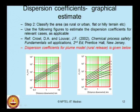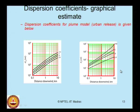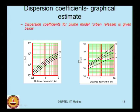For an urban release, two figures are available that vary significantly from a rural release. For an urban release, if you know the downwind distance in kilometers and the identified Pasquill stability class from A to F, you can obtain sigma y and sigma z — the dispersion coefficients required to estimate the release concentration in kg per cubic meter for a plume model.